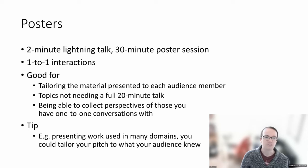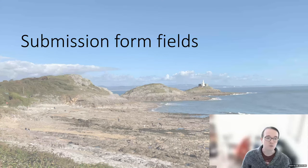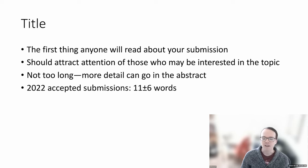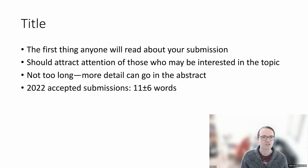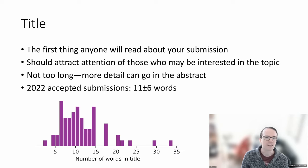So those are the formats we're soliciting submissions for this year. The next thing to talk about is how to approach the submission form itself. The first thing is the title. It might seem obvious, but this is going to be the first thing anyone sees about your submission, so it should communicate enough information to attract people and make them think, what's that about? I'd like to know more. It shouldn't be too long — you can defer to the abstract for detail. We have data from last year: the average accepted submission had an 11-word title, with a standard deviation of six words.